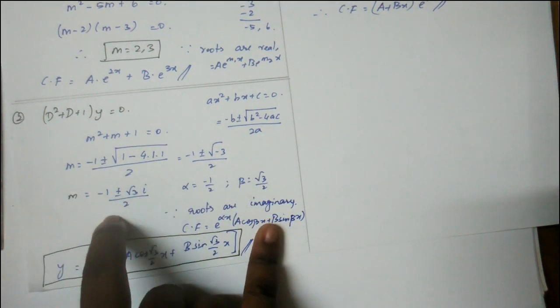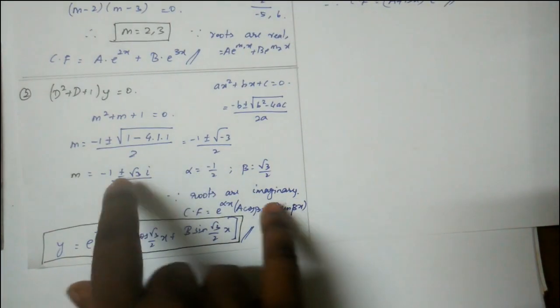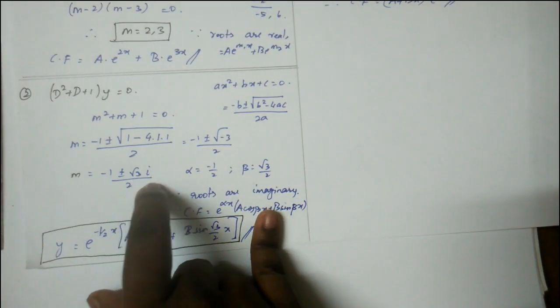So alpha is the real coefficient and beta is the imaginary coefficient. This is -1/2, and beta is √3/2.